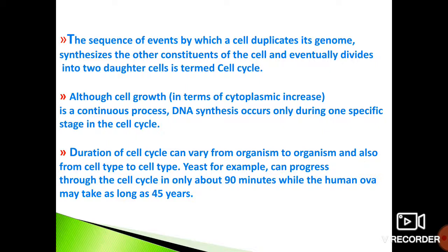The cell cycle is a very varied item as far as its time requirement is concerned. It can take as little as 90 minutes, or as we know in the human ovum, the entire cell cycle — which also includes the M phase — may be completed in about 40 to 45 years. At this point, as you venture into the study of the cell and the concept of cell cycle, we need to understand that the complete cell cycle is a varied affair with a varied time period.